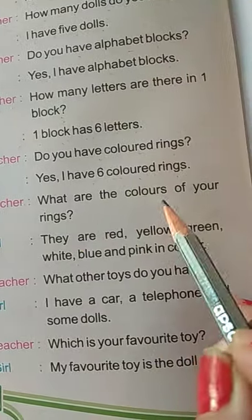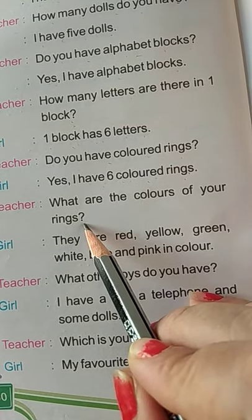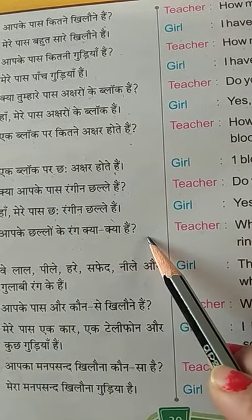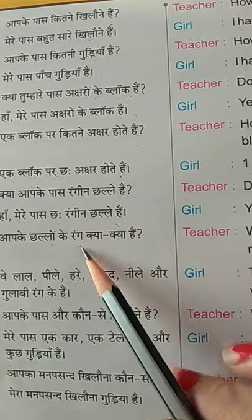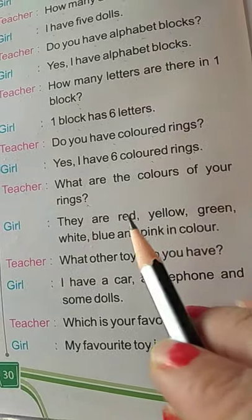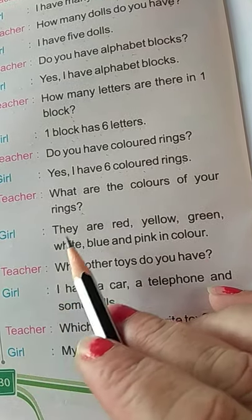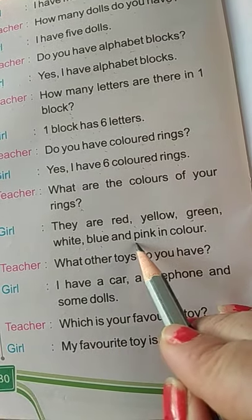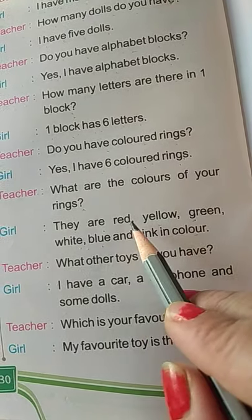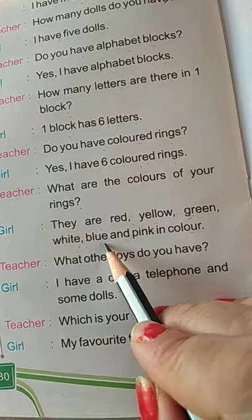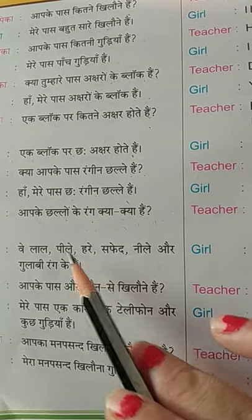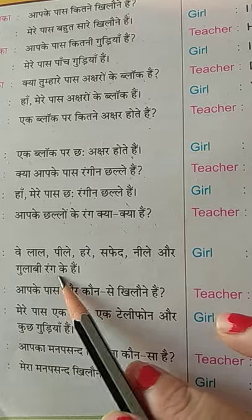Teacher asks: What are the colors of your rings? Aapke challon ke rang kya kya hain? Girl answers: They are red, yellow, green, white, blue, and pink in color. Ve laal, peele, hare, safed, neele aur gulaabi rang ke hain.